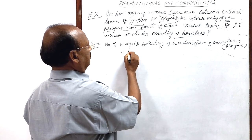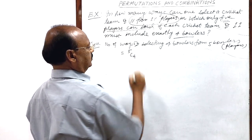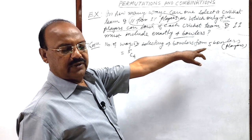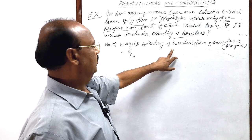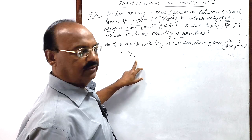How can we select it? 5C4. Out of 5 players who can bowl, we have to select 4 bowlers in how many ways? 5C4 ways.